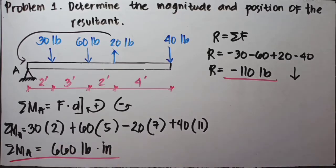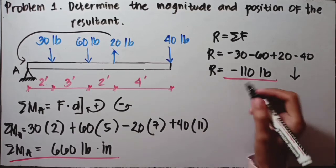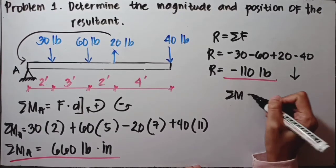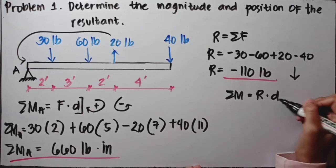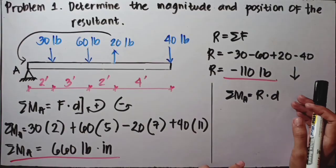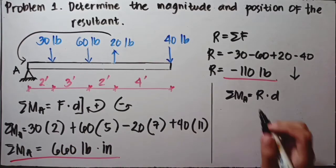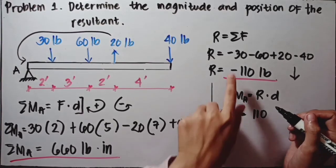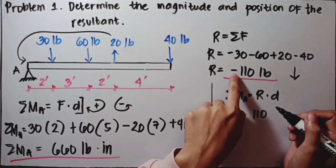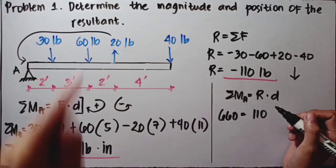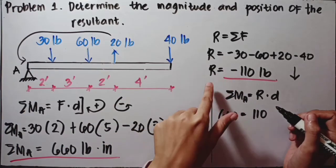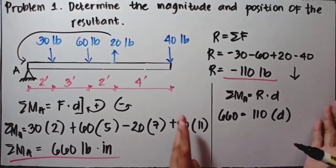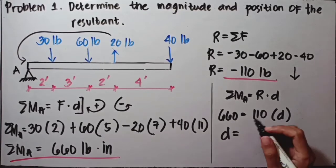Now that we have the moment, we can determine the location of the resultant using the third formula: summation of moments equals the resultant times its moment arm. Substituting the values — summation moment A is 660, and R is 110. We use 110 without the negative sign because the sign only indicates the direction of the force, not the distance. So 660 equals 110 times D, and D equals 6 inches.